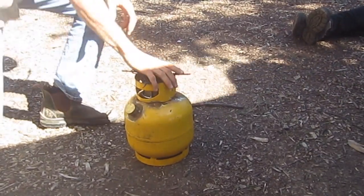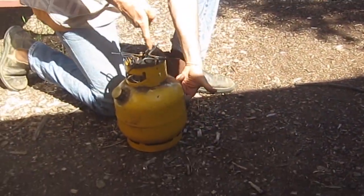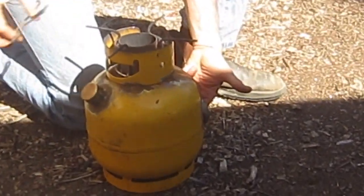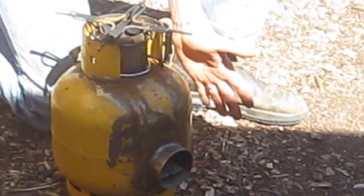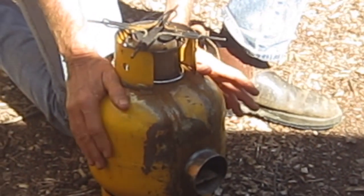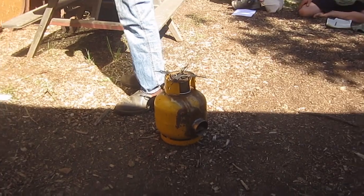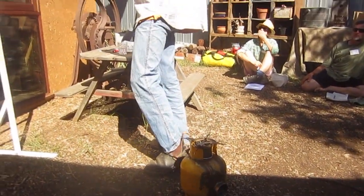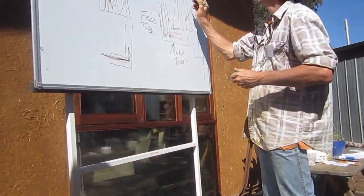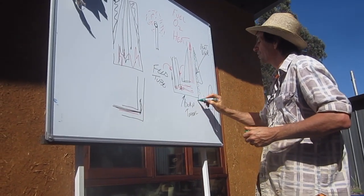There's our feed chute and it's basically an L shape, and there's our heat riser. Now the other fundamental thing about a rocket stove is that the combustion area is insulated. If you look at this rocket stove here, it will have a layer of insulation around it.